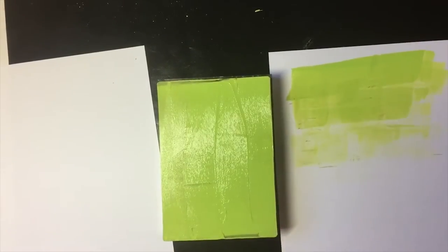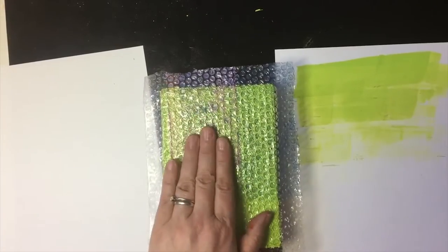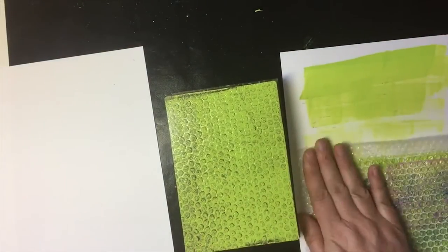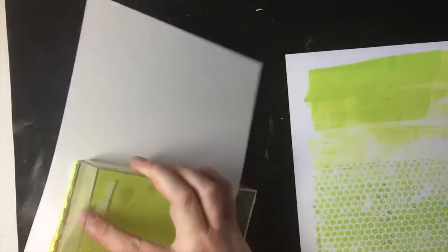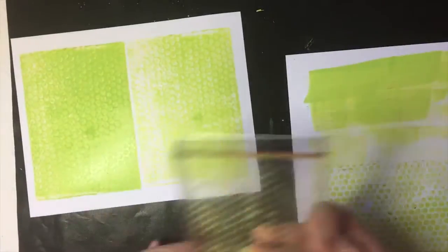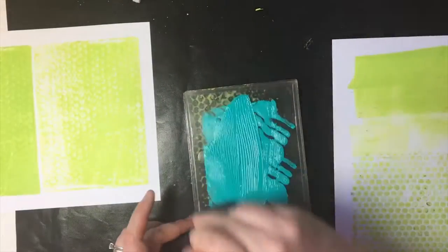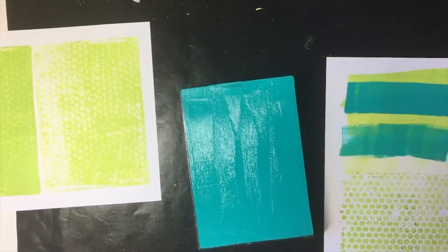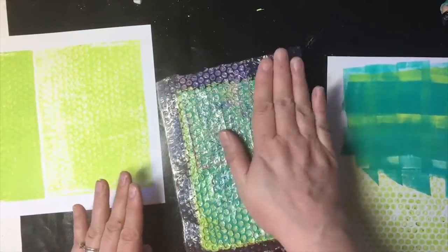All right, I'm just using some regular old bubble wrap today. Simple textures, especially ones that are small, like this particular bubble wrap, and fill a lot of the space in your sheet of texture, are great for getting subtle prints. You can just use the same bubble wrap multiple times with different colors, and pretty quickly build up some really detailed layers.